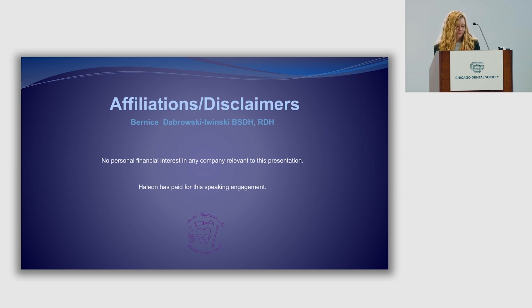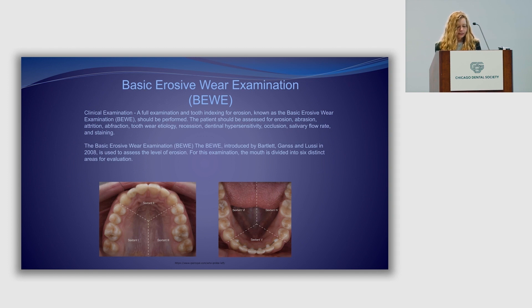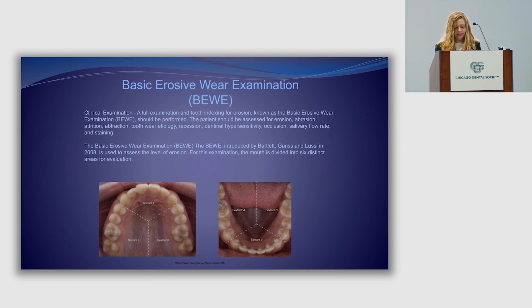If you graduated from school after 2008, you probably remember something about the basic erosive wear examination, known further on as the BWI. You're probably not using it too much in your everyday practice, so let's quickly get your gray matter working. The BWI is used as an assessment exam and can be quickly done. The mouth is divided into sections as seen here in the photos — three sections for the maxilla and three sections for the mandible. There is only one score per sextant; you will only use the highest score of that sextant. The BWI score is the sum of all sextants.